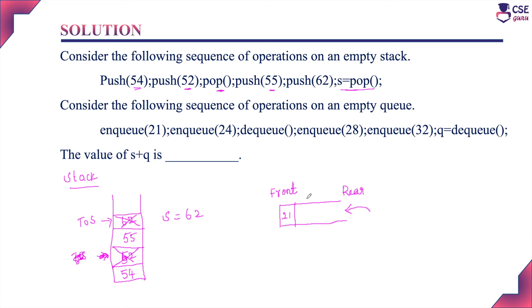Next NQ 24 — element 24 is inserted. Then DQ: the first element entered is 21, so 21 is deleted. Next NQ 28 — insert 28 into the queue. Then NQ 32 — insert 32 into the queue.